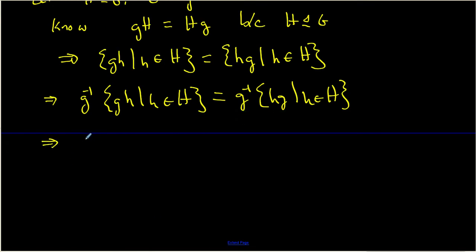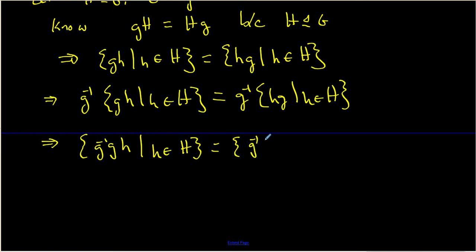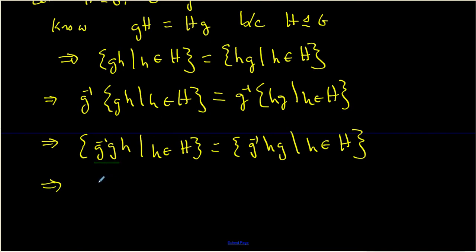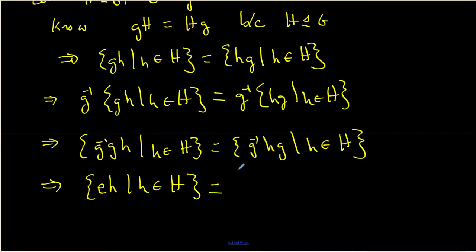When we do that, we can bring that g⁻¹ into each of the set notations. The set on the left becomes the set of g⁻¹gH's, where H is ranging over all elements of H, and the set on the right becomes the set of g⁻¹HG's, where H is ranging over all elements of H. In the left set, g⁻¹ times g is always E, so that side is really just the set of objects that look like E times H, where H belongs to capital H. On the other side I can't simplify further, so I leave it as is.